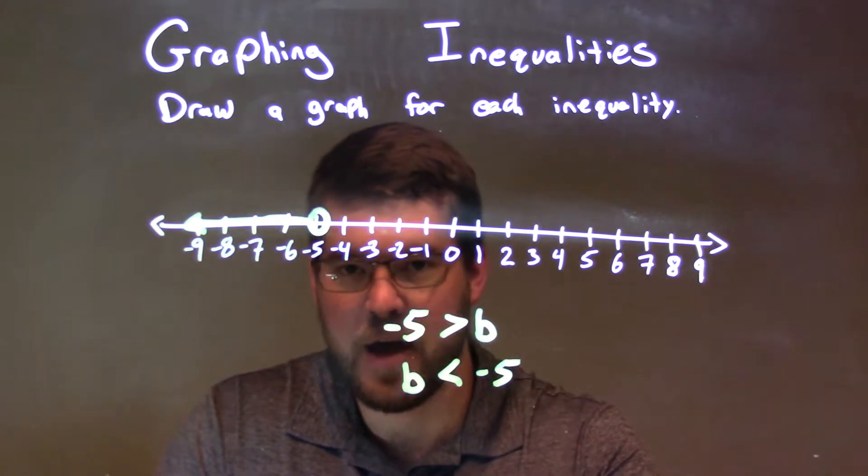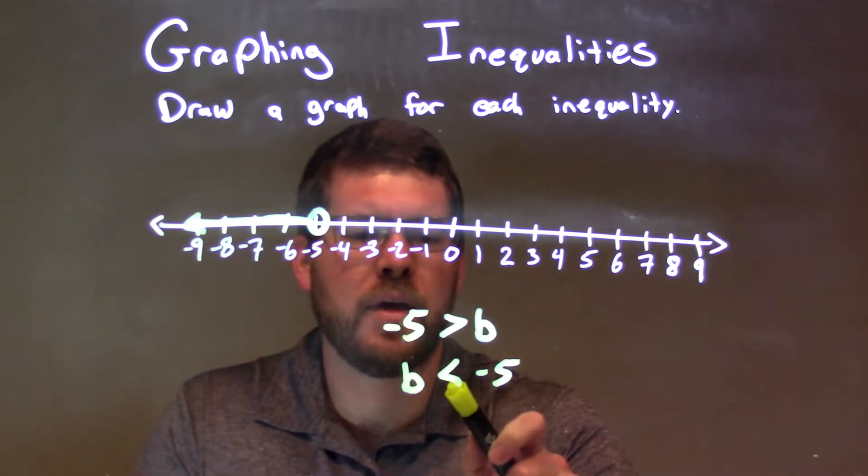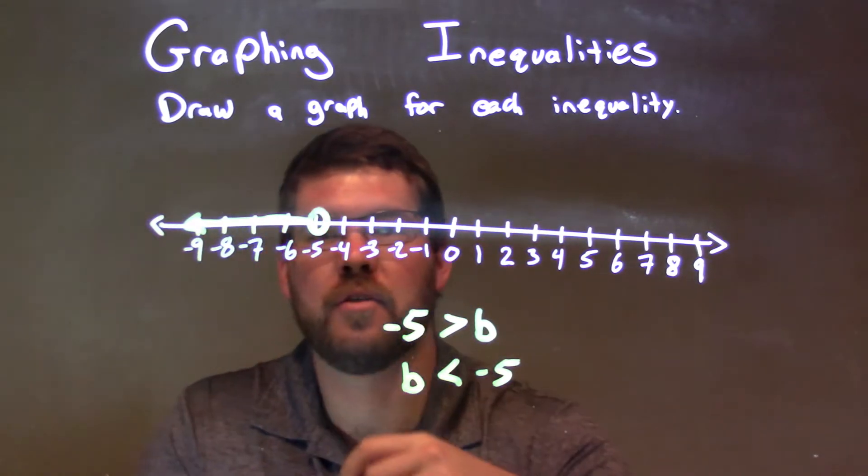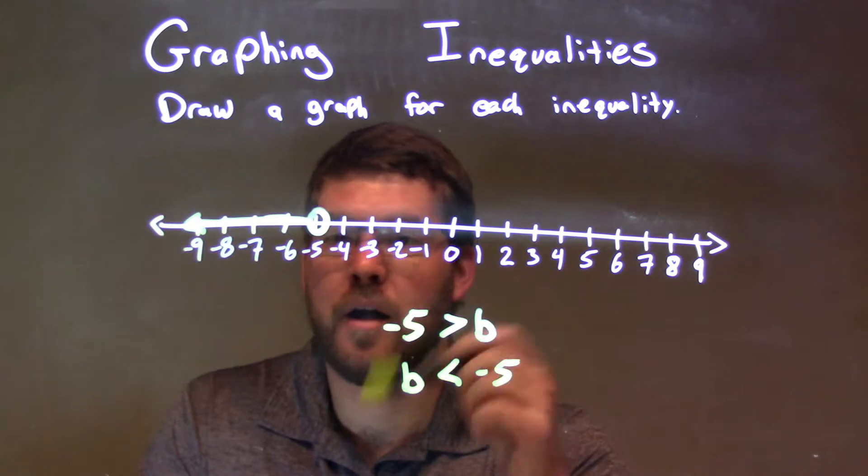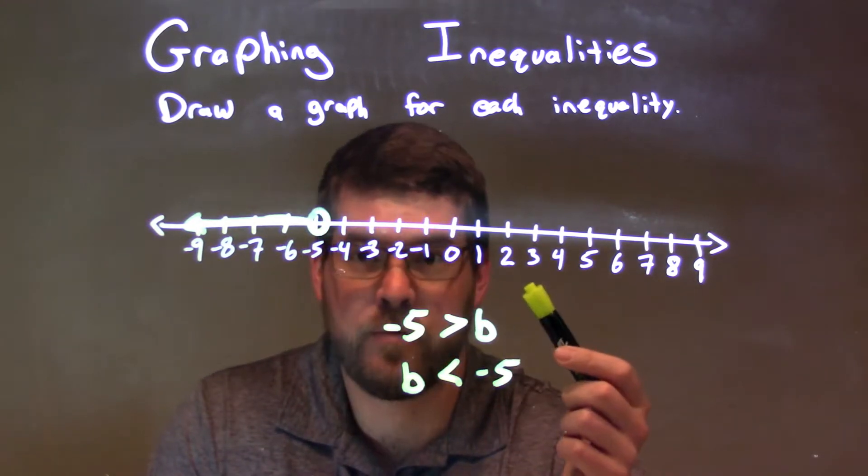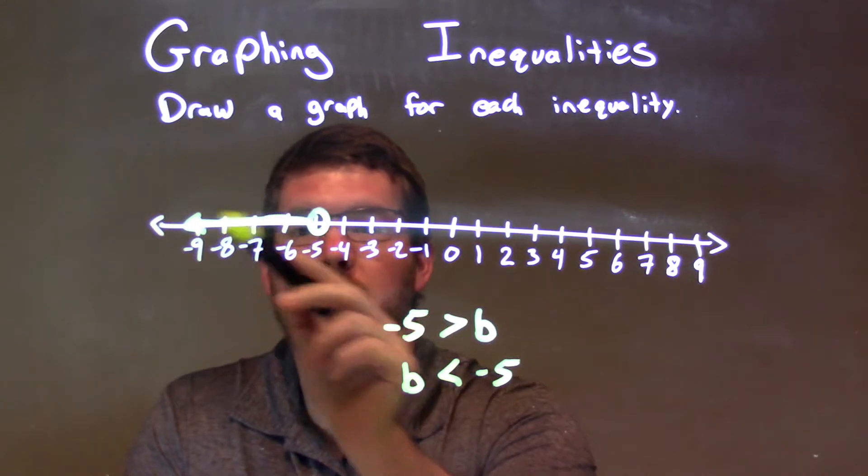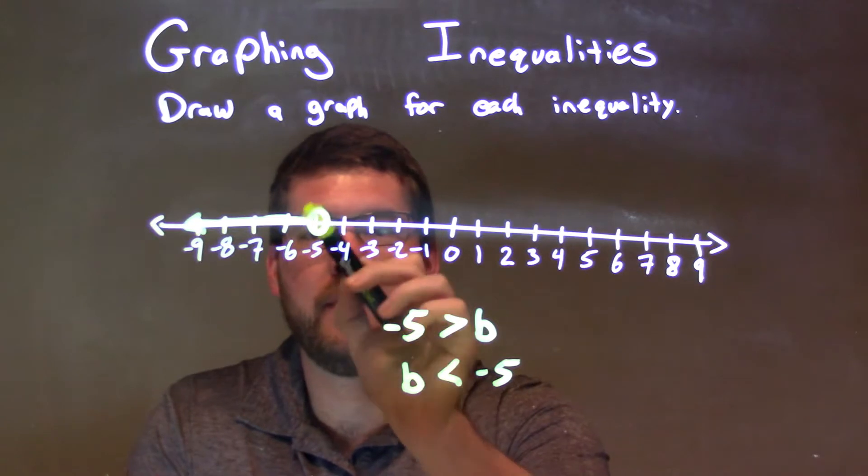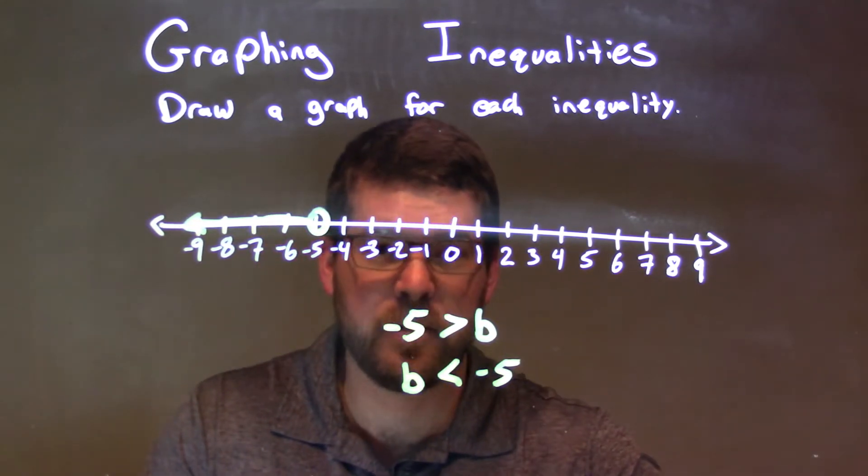But I find this easier to graph now. We start at negative 5 right here. We then have an open circle because b is not equal to negative 5, and we shade it to the left. This graph really shows both of these inequalities, represents both of them. Negative 5 is greater than b, b being our shaded area, but also b is less than that negative 5 not including it. Our graph is our final answer.